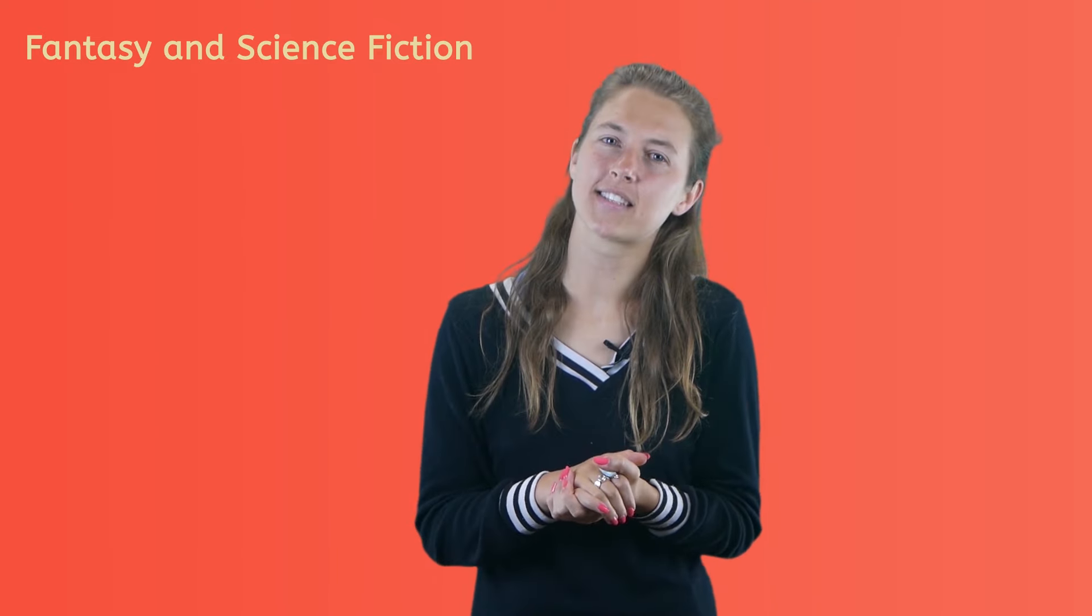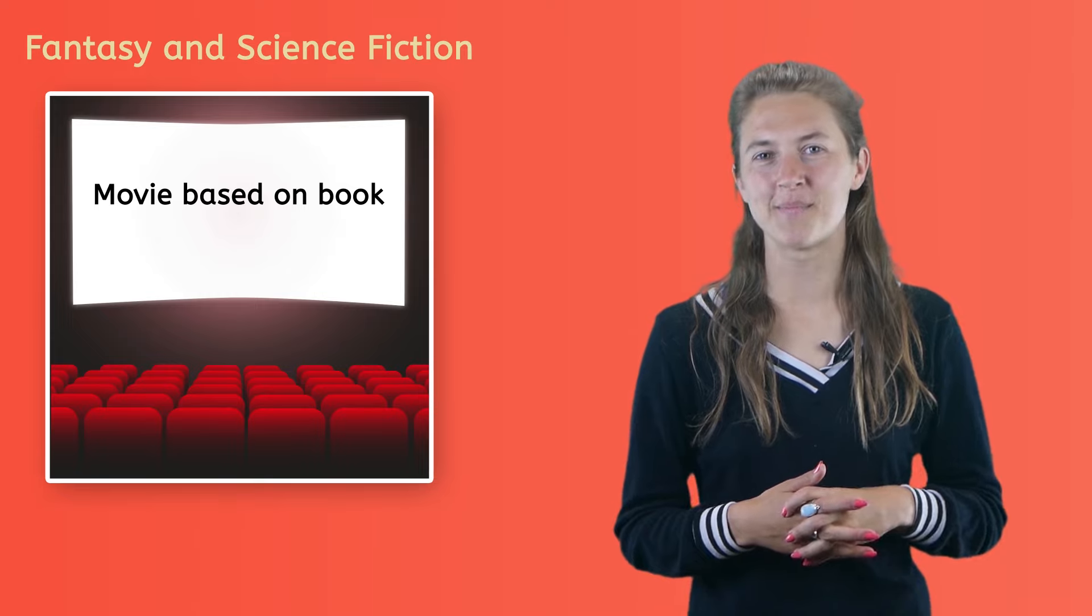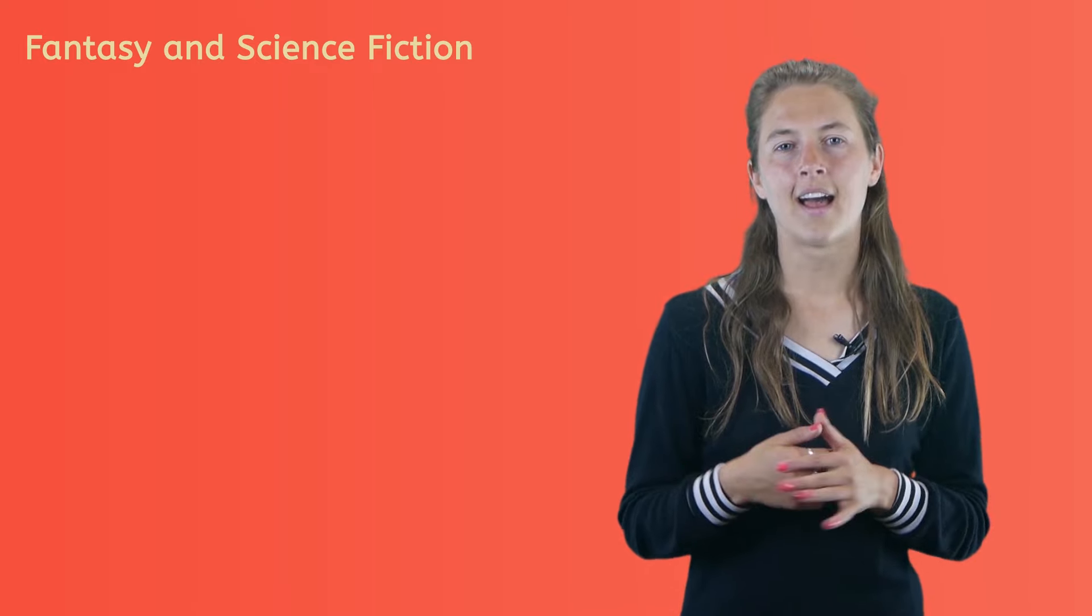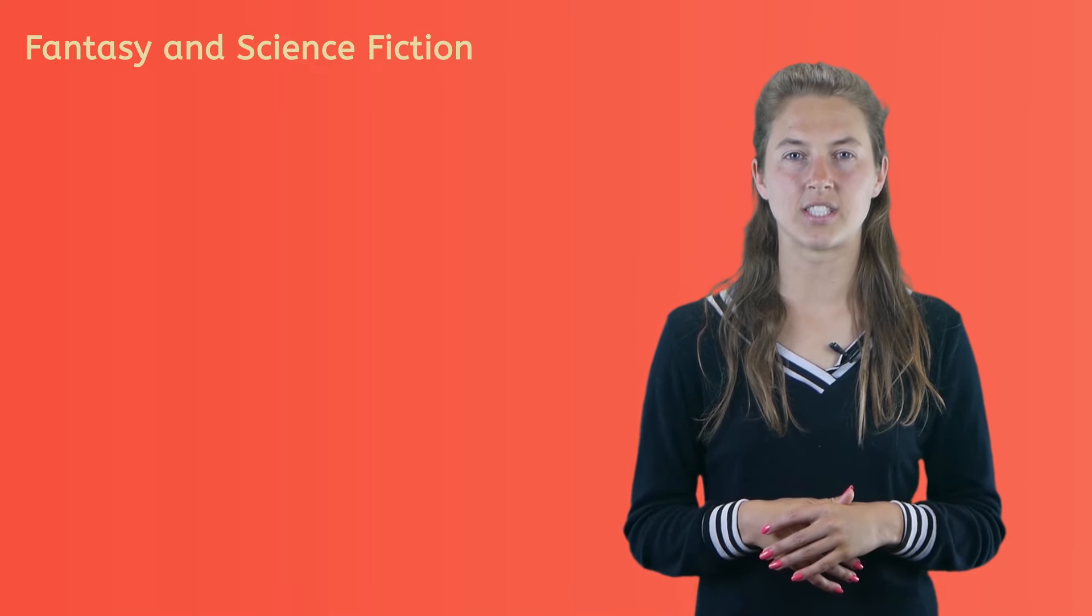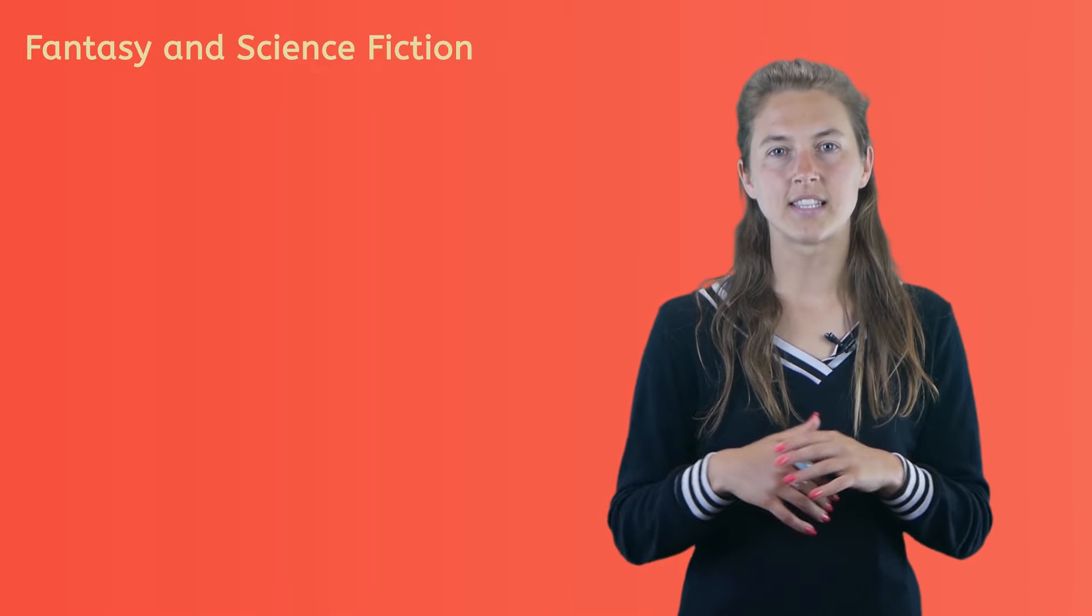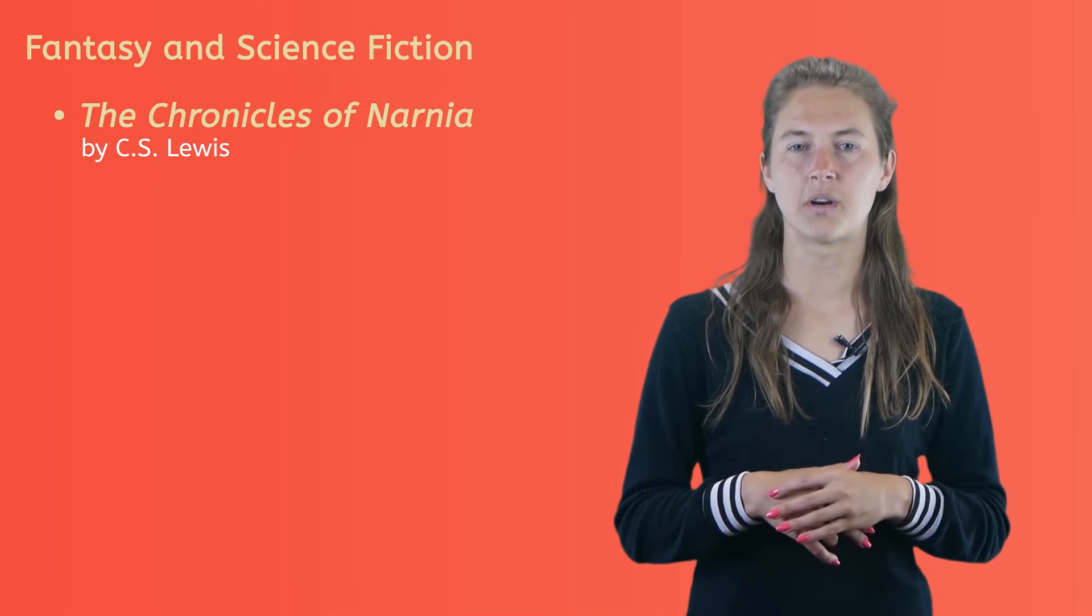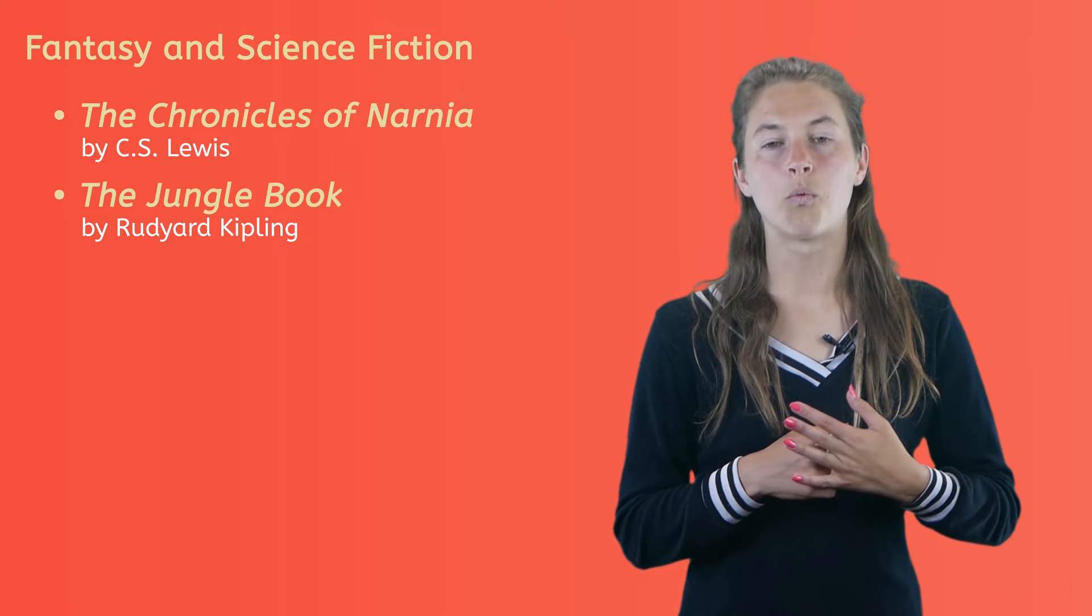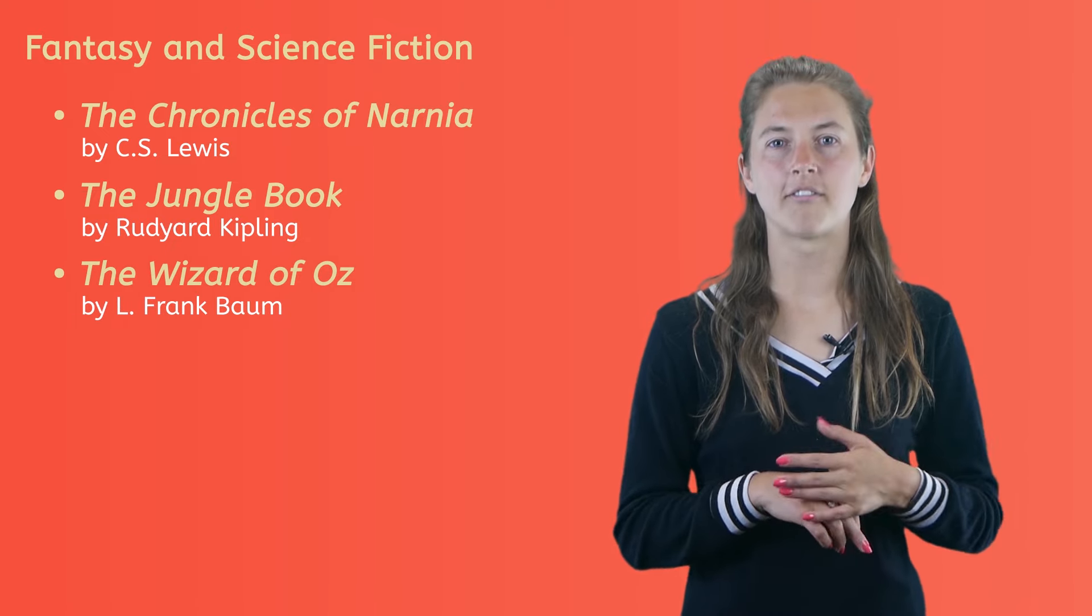There are so many great examples of fantasy and science fiction stories. Many of these stories are made into great movies, but the books seem to always be better. These stories are often written in series, meaning the author has written more than one book following the same characters and events, evolving the story or the plot. A very popular fantasy fiction series is, of course, the series The Chronicles of Narnia by C.S. Lewis. Others include The Jungle Book by Rudyard Kipling, The Wonderful Wizard of Oz by L. Frank Baum.